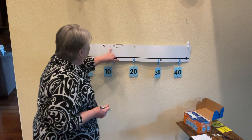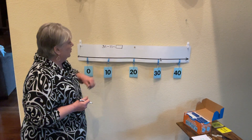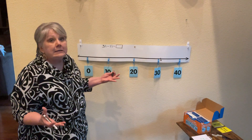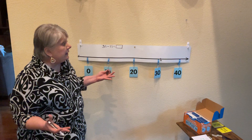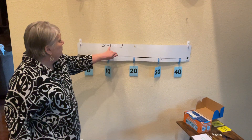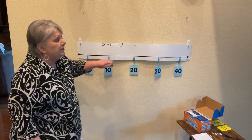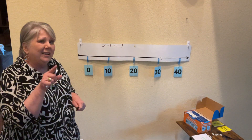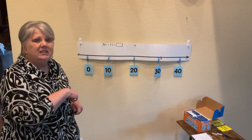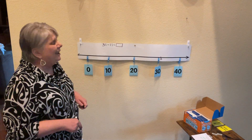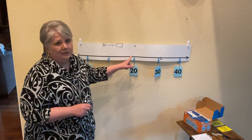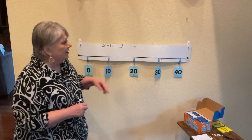Now we're going to take away 11. There are lots of different ways that kids can think about taking away 11. You may have some that take the 10 first and then the 1. You may have some that will take the 1 first and then the 10. And you're going to have those that count backwards by 11 until they get to the answer.